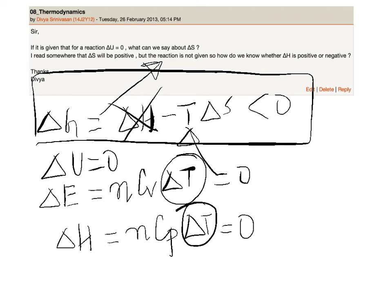Minus T delta S has to be less than zero, and T cannot be negative, then it means that delta S must be greater than zero.